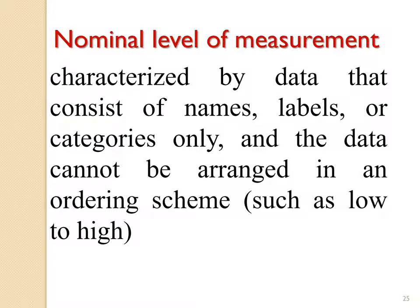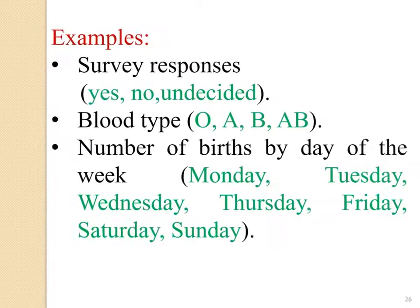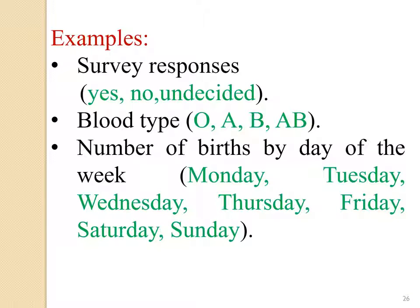Nominal level of measurement is characterized by data that consists of names or labels. Nominal data must be qualitative data, not quantitative. The data cannot be arranged in any ordering scheme — we cannot write any order from low to high or high to low; there are just categories. Examples: yes/no responses, blood type, number of births by day of the week, and brand of motorbike or house — we cannot write any order.